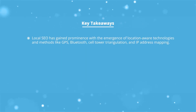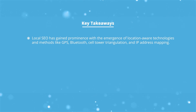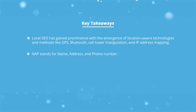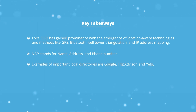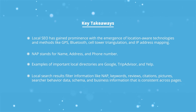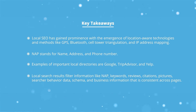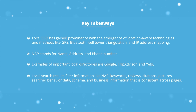The key takeaways for this section: Local SEO has evolved in pace with the emergence of mobile devices with location-aware technologies such as GPS, Bluetooth, cell tower triangulation, and IP address mapping. NAP is one of the most important signals, standing for name, address, and phone number. Some important directories include Google, TripAdvisor, Yelp, and local business listings. The most important local search signals include on-page signals such as NAP and keywords, completed business information in directories and search engine business listings, reviews, citations, schema, pictures, and searcher behavioral signals.